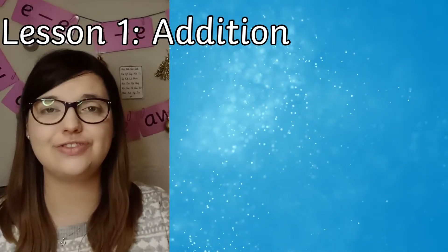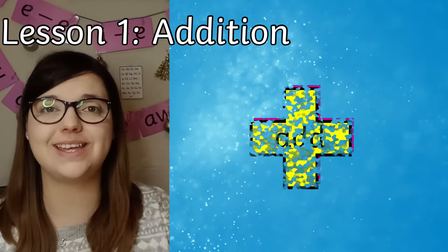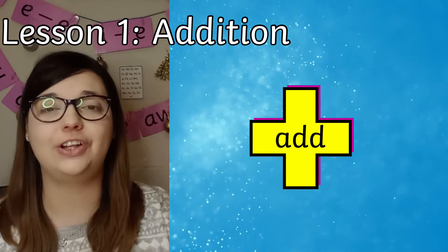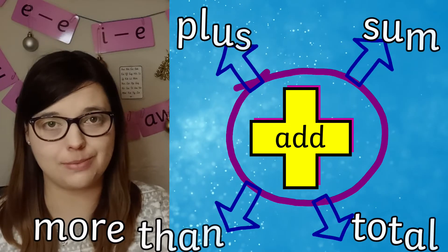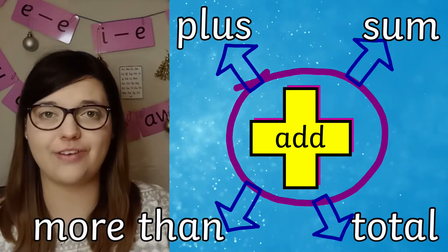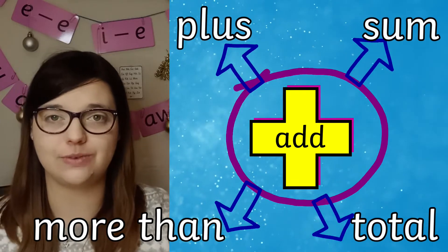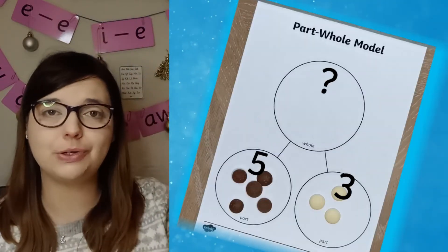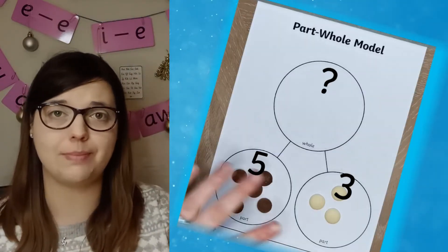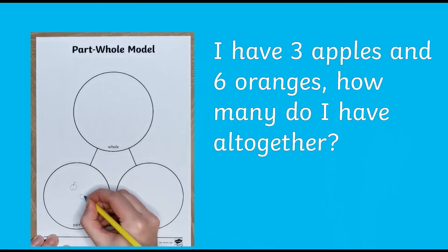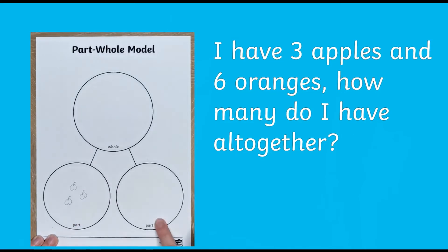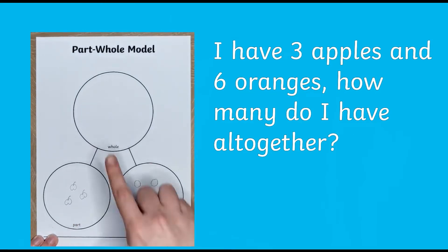In Lesson 1, children are introduced to addition, including recognising the mathematical symbol and the various names we use to represent it. And the lesson progresses children by moving them on from using physical objects instead to using drawing to solve addition number sentences.